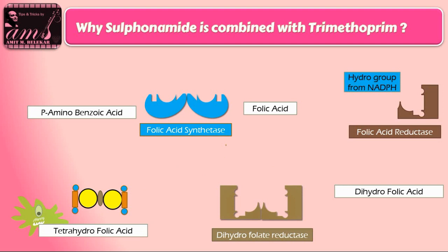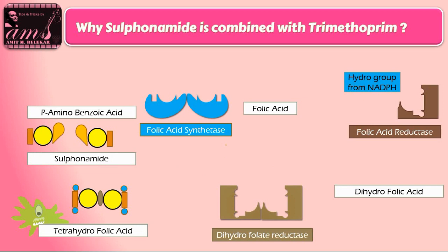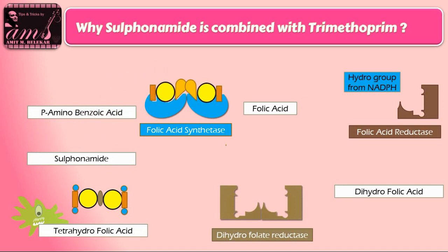Sulfonamides have structural similarity with PABA, that is para-amino benzoic acid. Because they have structural similarity with PABA, they competitively inhibit the bacterial folic acid synthetase enzyme and prevent the conversion of PABA into folic acid, thus interfering with bacterial growth. Therefore, sulfonamides are bacteriostatic in action.